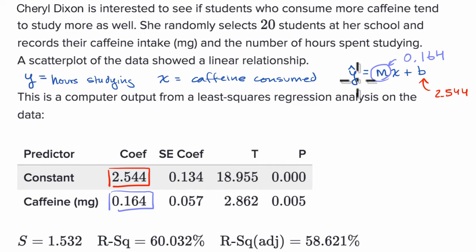So just like that, we actually have the equation for the regression line. That is why these computer things are useful. So we can just write it out. Y hat is equal to 0.164x plus 2.544.